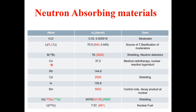Cobalt has an absorption cross-section of 37.2 barn and is used in medical radiotherapy or as a nuclear reaction product. Rhodium has a cross-section of 144.8 barn. Cadmium has an absorption cross-section of 2520 barn and works as a shielding material. Indium has a cross-section of 193.8 barn.